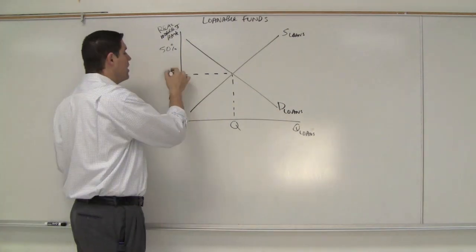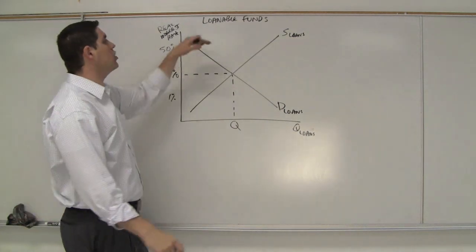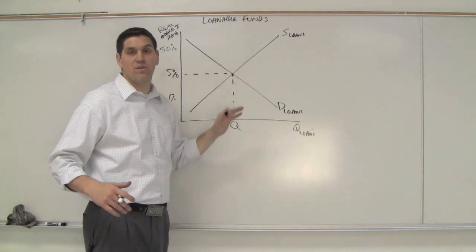We're going to get somewhere where we're going to make equilibrium. Let's say 5% is the real interest rate at equilibrium. There's no surplus, there's no shortage. Now, keep in mind, like in all markets, these curves can all shift around.